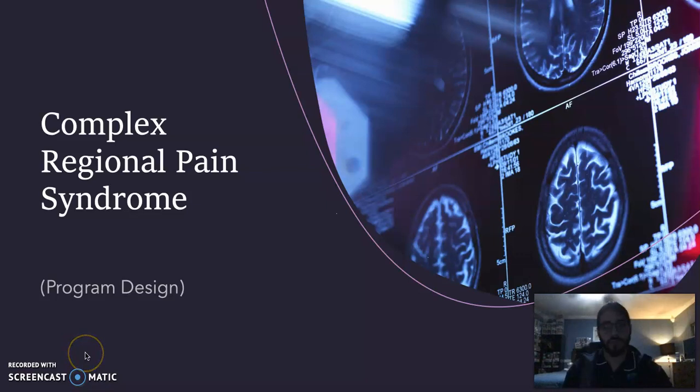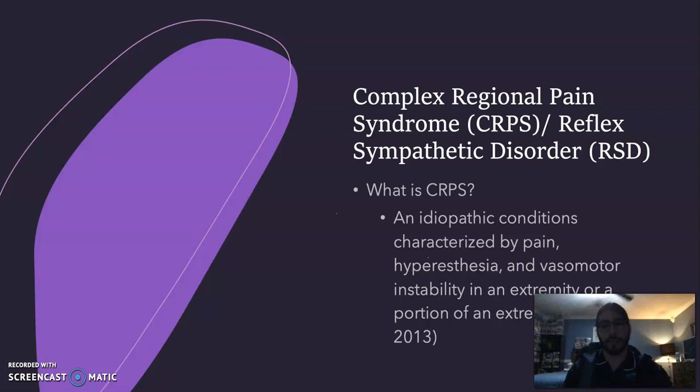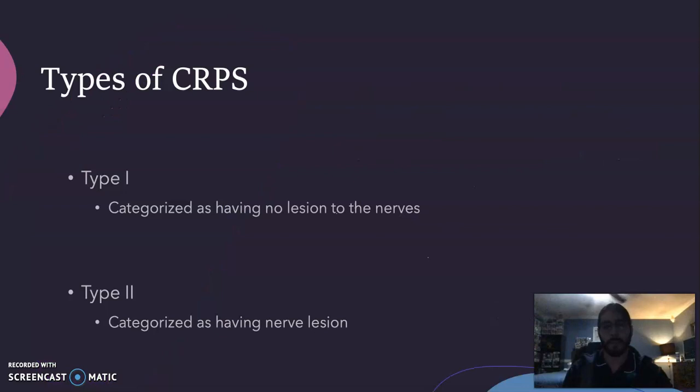Hello guys, my name is Alana Yala and today I will be doing my program design presentation on complex regional pain syndrome. Complex regional pain syndrome, or CRPS, also known as reflex sympathetic disorder RSD, is an idiopathic condition characterized by pain, hyperesthesia, and basal motor instability in an extremity or a portion of an extremity. There are two types of CRPS: type 1, categorized as having no lesion to the nerve.